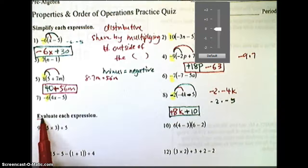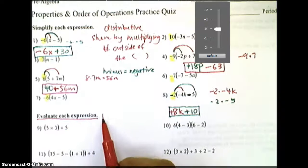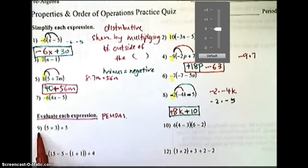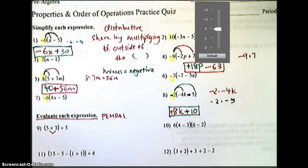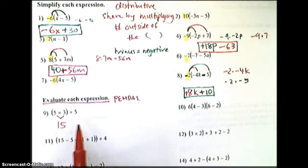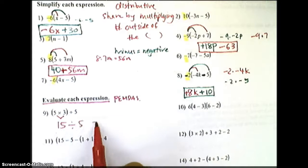For number 9, you're just going to simply be evaluating the expression. So use PEMDAS. Number 9, we want to do the parentheses first. 5 times 3 is 15. Then you're going to divide by 5, which gives you 3.